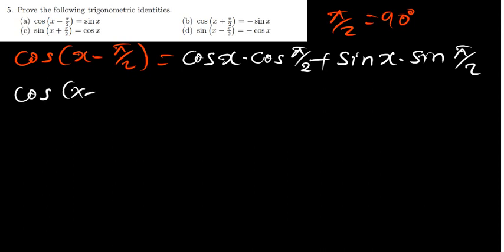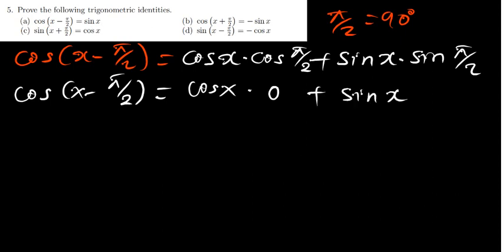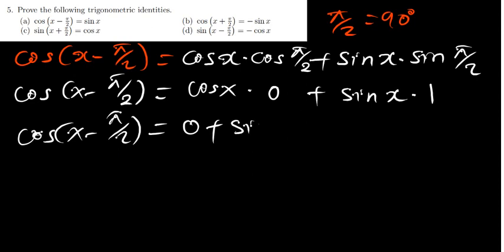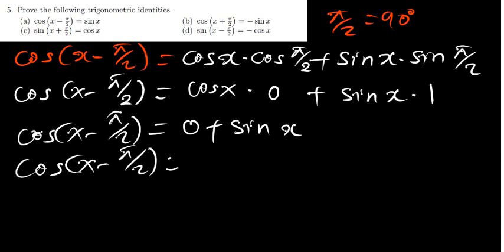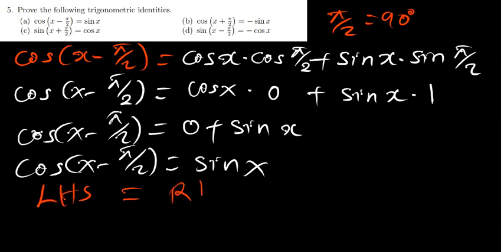So cos of (x minus pi over 2) gives us cos x times cos 90 plus sine x times sine 90. Cos 90 is 0 and sine 90 is 1. So we have 0 times cos x plus 1 times sine x, which gives 0 plus sine x, equal to sine x. The left-hand side equals the right-hand side. Hence, proved.